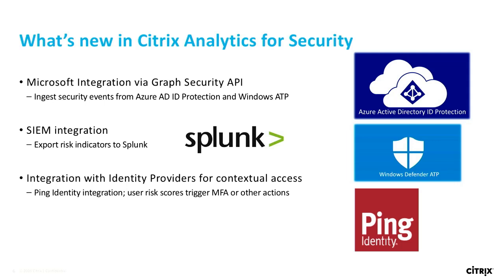Second, many customers told us they've already invested in Splunk and want to aggregate data there because they have workflows initiated through Splunk. You can go within the Citrix Analytics platform, configure Splunk as a data source, and all the risk indicators can be exported as a feed into Splunk just like any other data source. And lastly, we're also working with Ping Identity such that as and when a risk score goes beyond a given threshold, we're able to take an action through Ping Identity, which is an IDP provider.